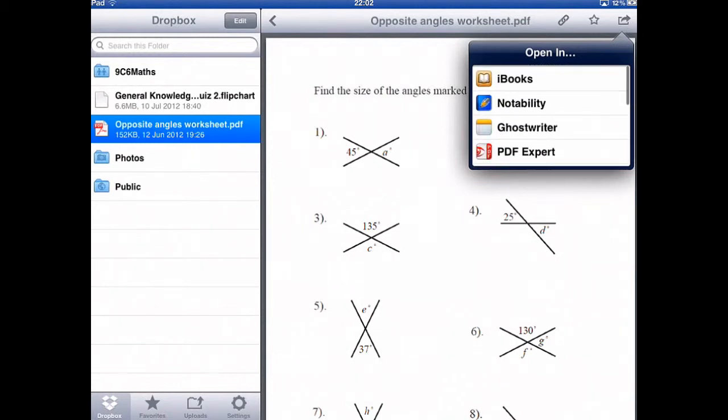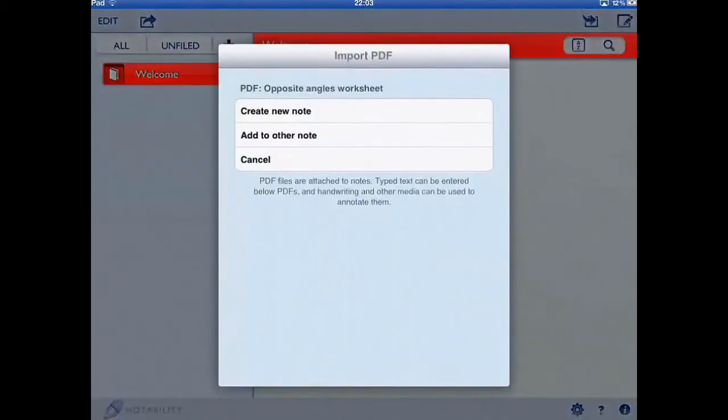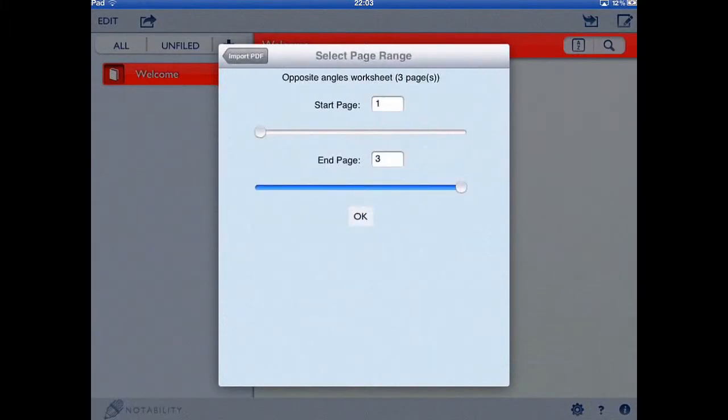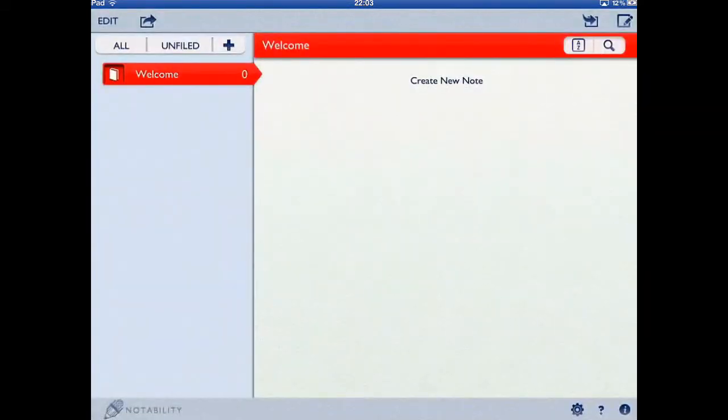The one we're going to use for now is Notability, which is a PDF annotation app. So if I select that, it's going to instantly open my file for annotation. I want to select a new note and I want all three pages of the file.